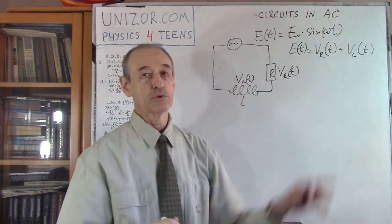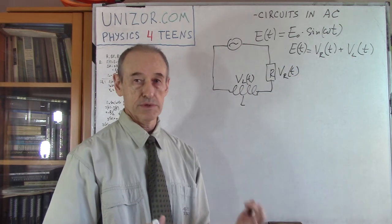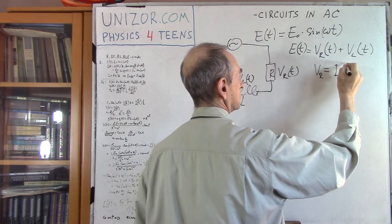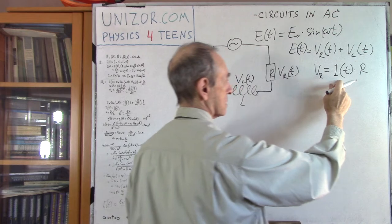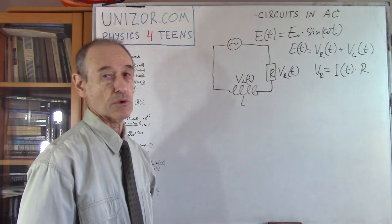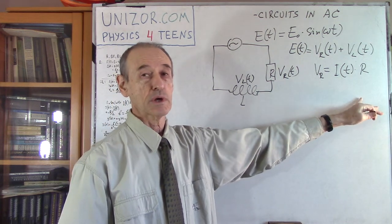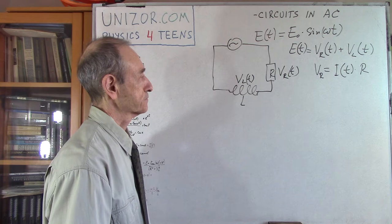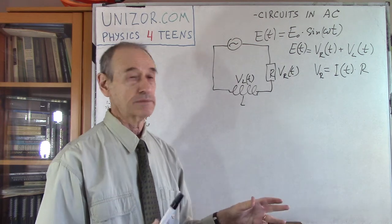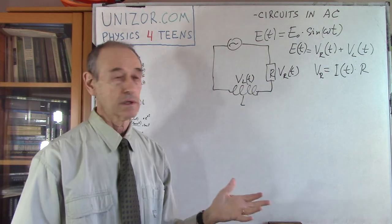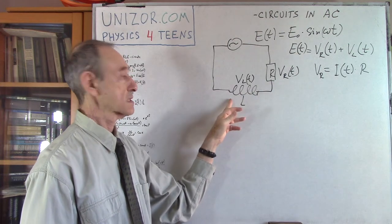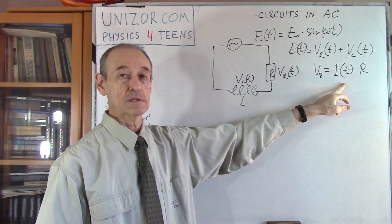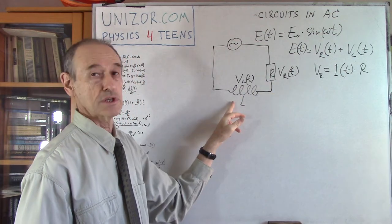What do we know about these two voltage drops? Well, this is the voltage drop on a resistor, and at any given time, it obeys the regular Ohm's law. So this is the current and this is the resistance of this particular resistor — voltage equals current times resistance. That's the regular Ohm's law. Since this is a closed circuit, the current which goes through the resistor is exactly the same as the current which goes through the inductor. That's why I'm using I(t) without any indices.